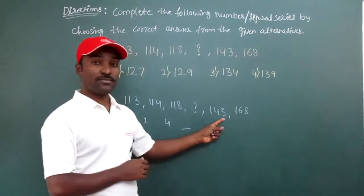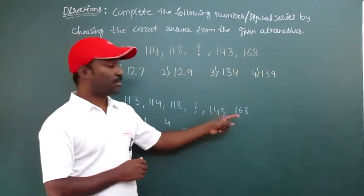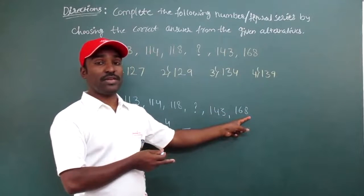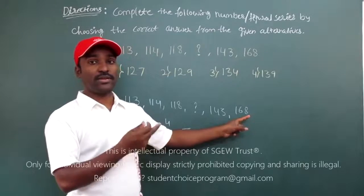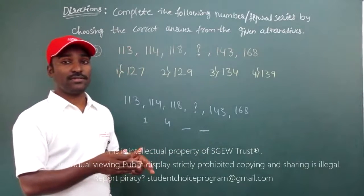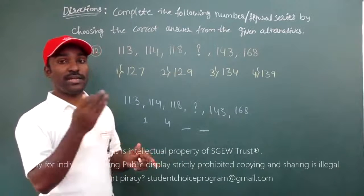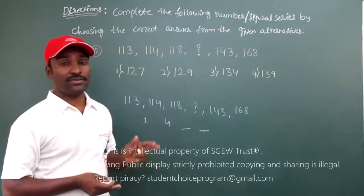17 plus remaining 8. 17 plus remaining 8. Even you can go with 17 plus 3, that is 20. 17 plus 3, that is 20. 20 plus 5, that is 25.